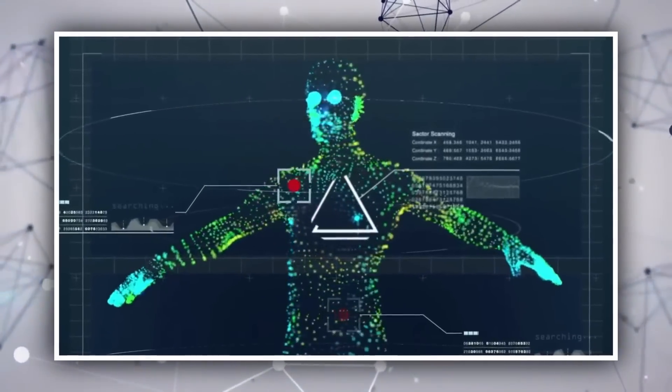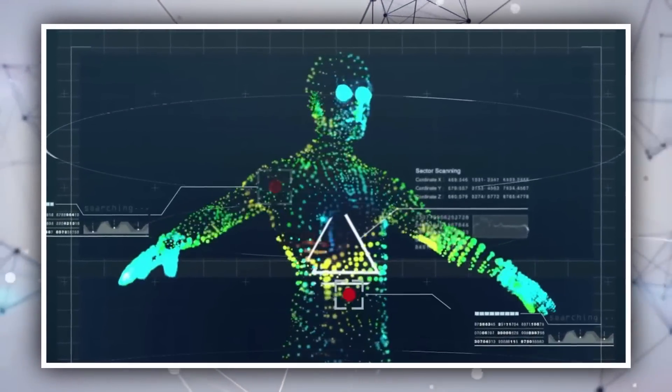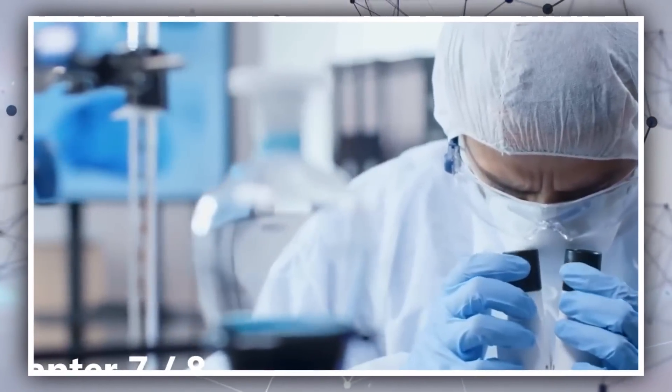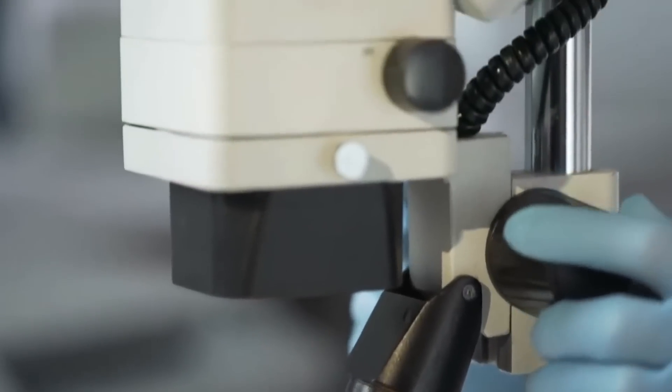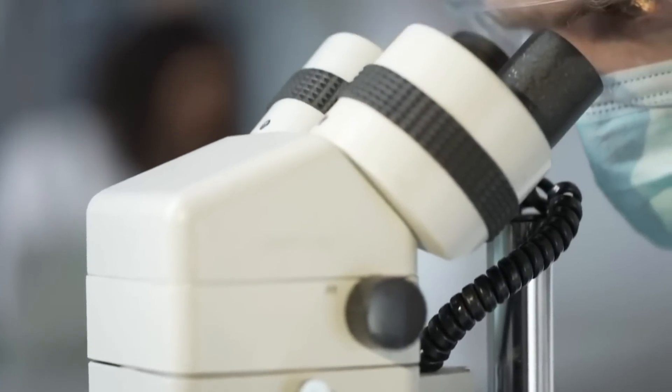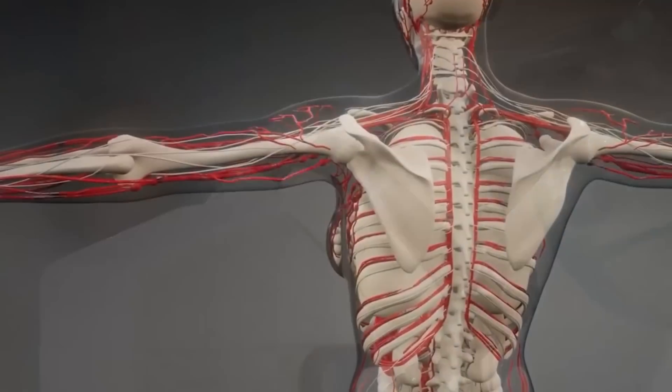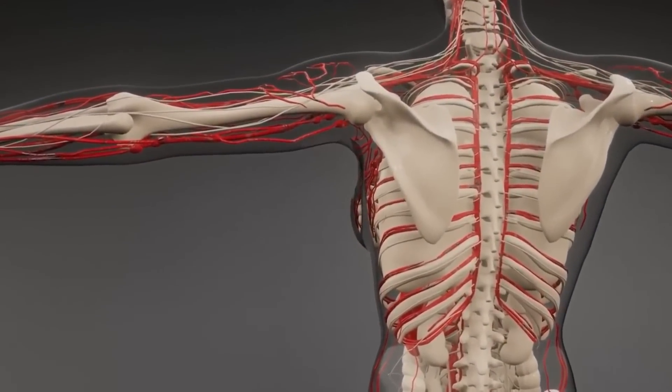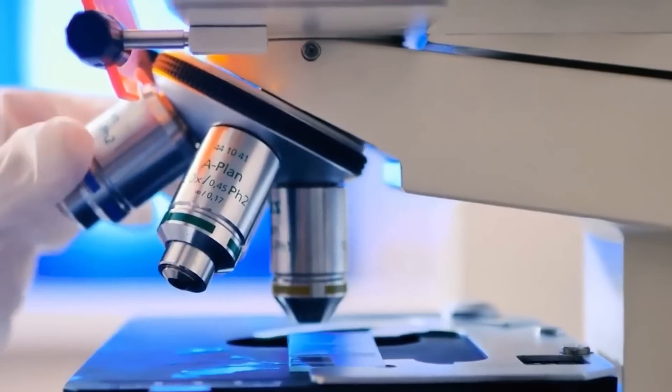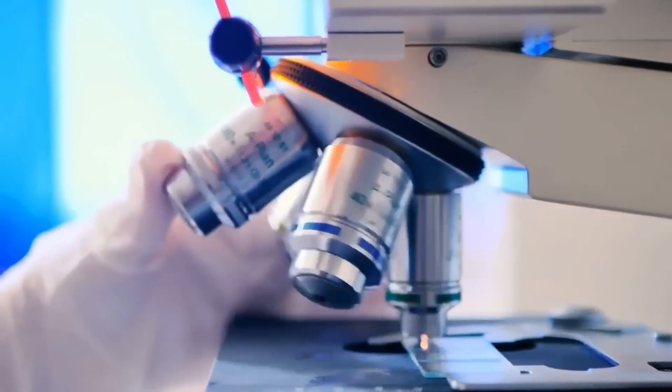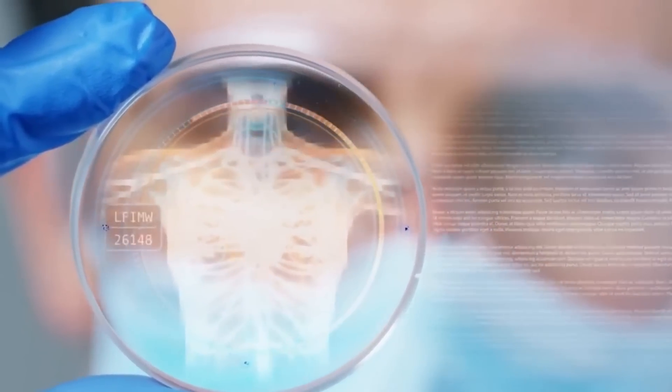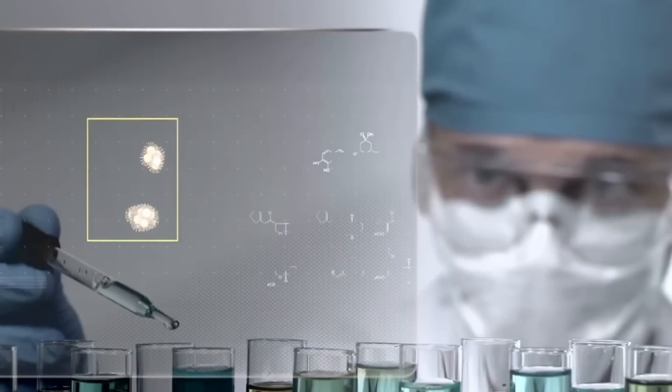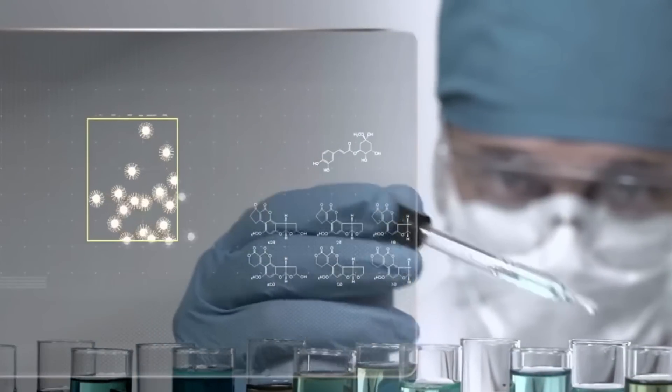A system such as the Argus 2 consists of more than just the implant, which is placed surgically in a procedure that takes four hours. The user also wears a pair of special glasses equipped with a small camera that sends video down a wire to a video processing unit that is normally attached to the user's belt. Using a VPU, the images are reduced to patterns of 60 black and white pixels and sent back to a transponder in the glasses, which wirelessly passes them to an antenna on the outside of the eye.